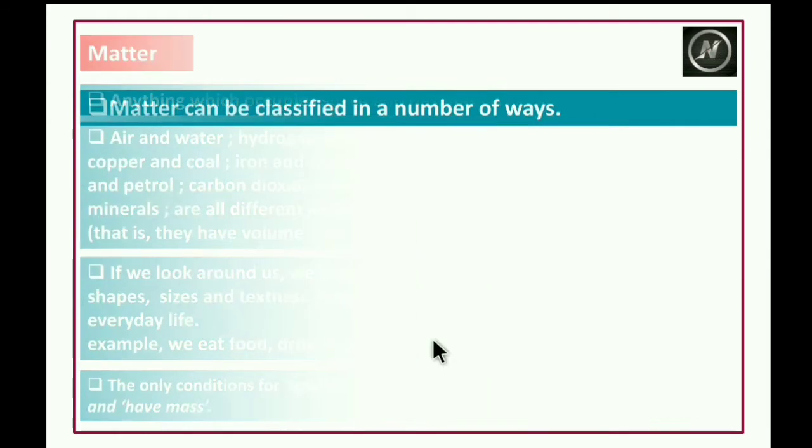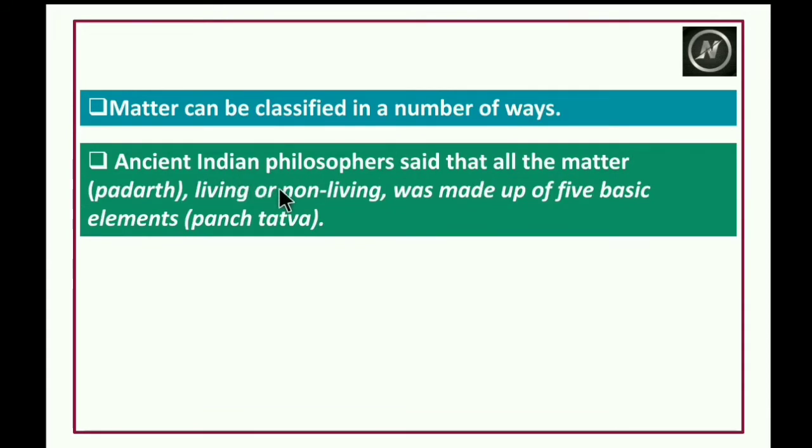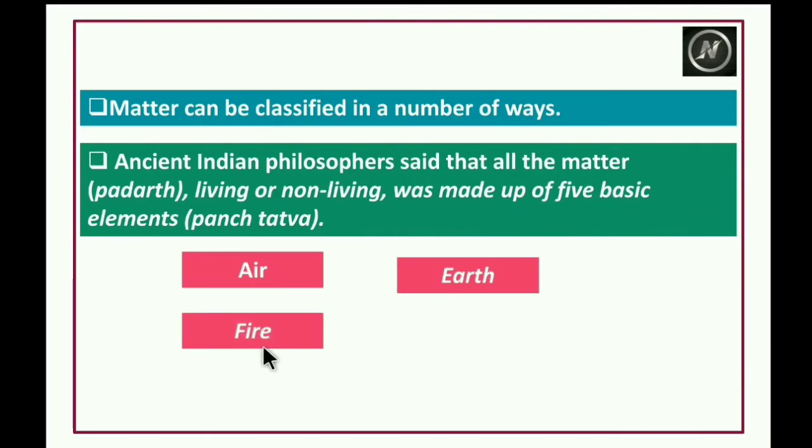Matter can be classified in a number of ways. Ancient Indian philosophers said that all matter, living or non-living, was made up of five basic elements called Panchatattva. These are air, earth, fire, sky, and water.